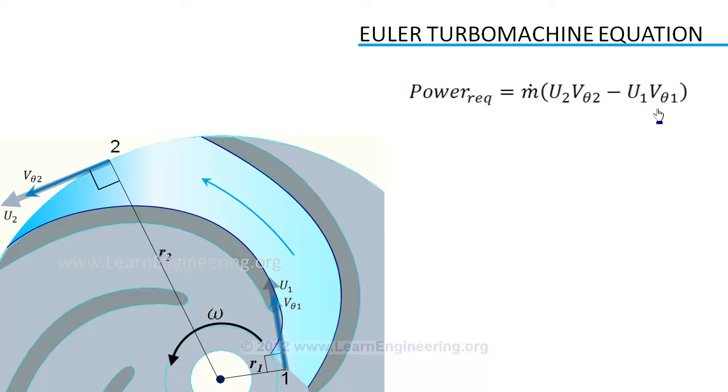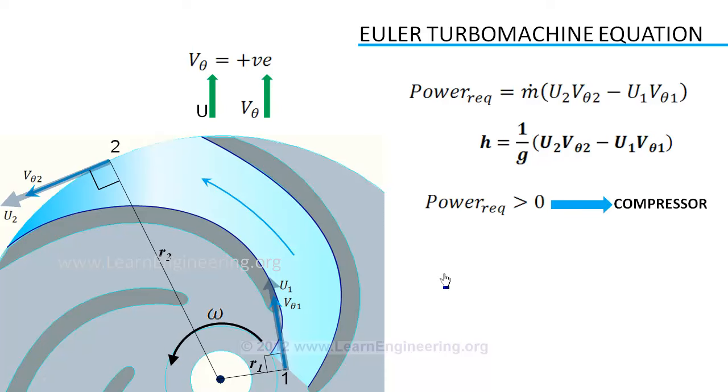V theta is positive if it is in the same direction of blade velocity, otherwise it is negative. If we divide power by weight of fluid flowing, we will get the energy head required to maintain this flow. If power required by the fluid is positive, it means fluid is absorbing energy, or the device is acting as a compressor. Otherwise, fluid is losing energy, so the device acts as a turbine.